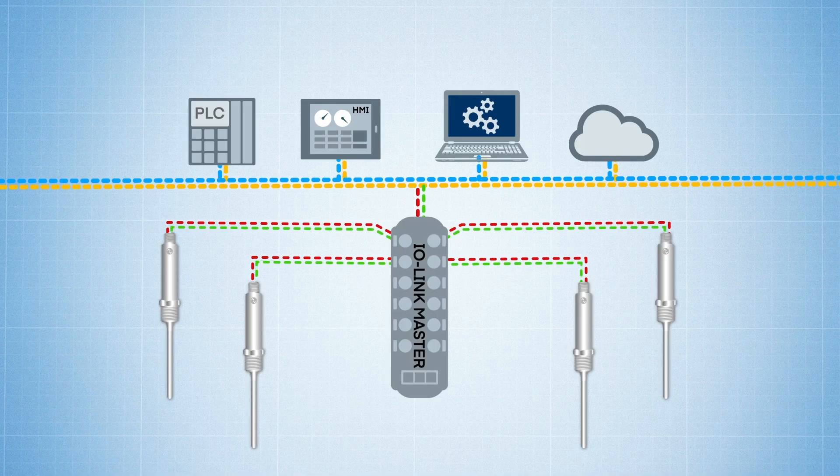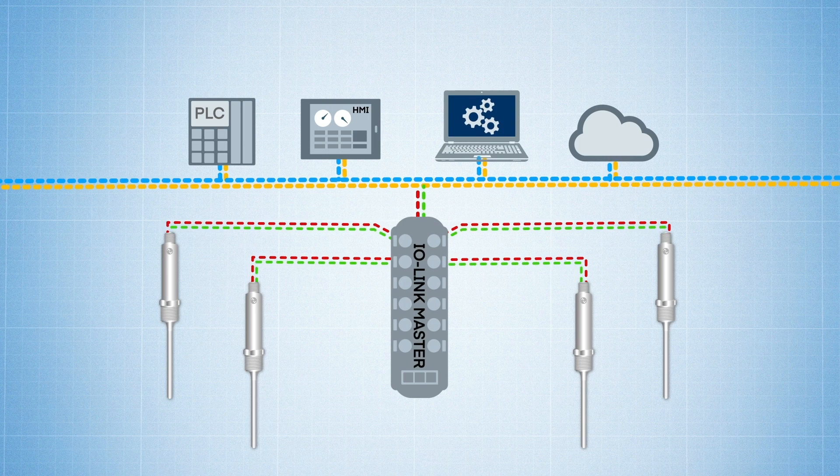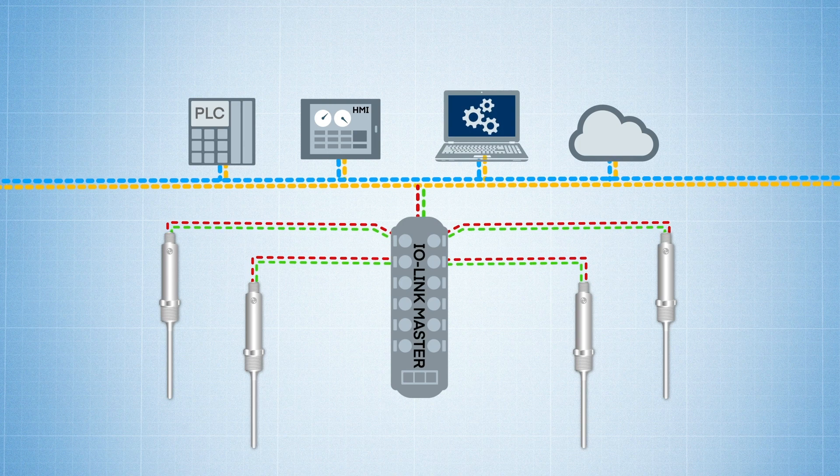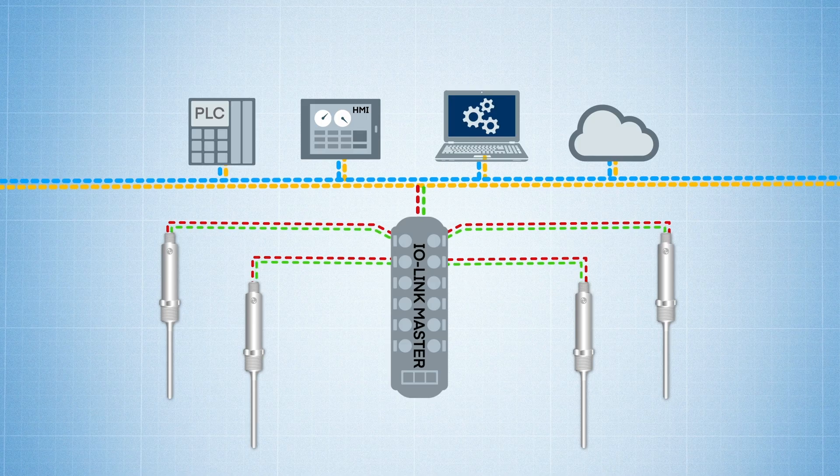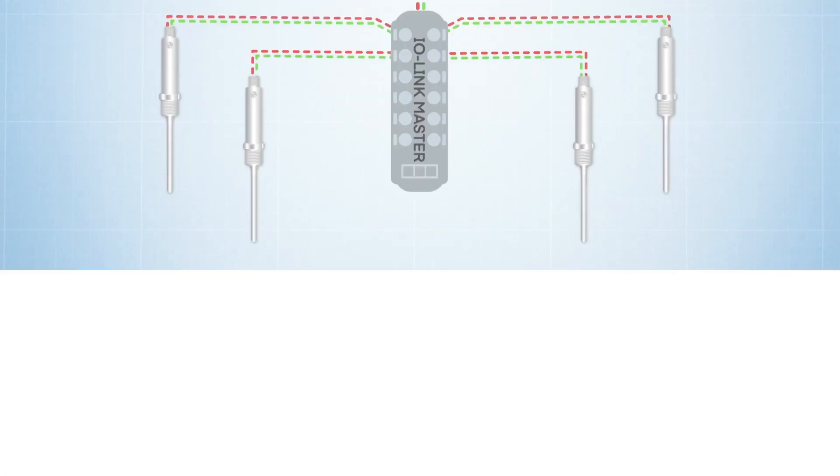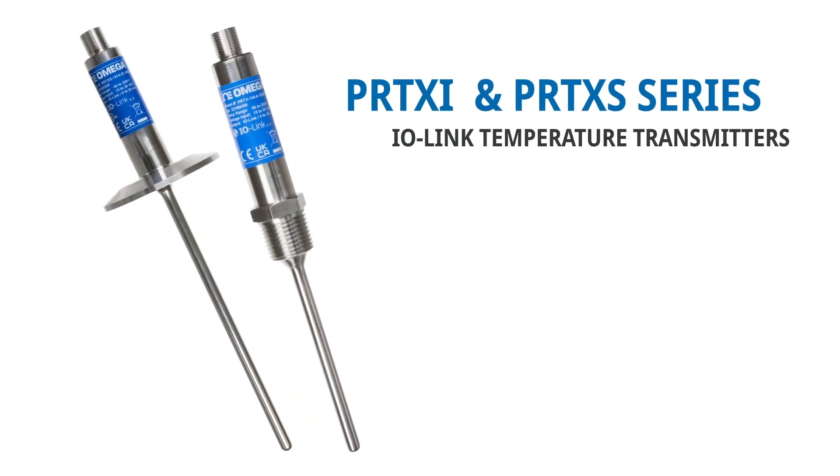And even if you aren't ready to upgrade to an IO-Link system, but you want to be ready when the time comes, Omega has the ideal IO-Link-compatible RTD sensor and transmitter package in the PRT-XI and PRT-XS series.